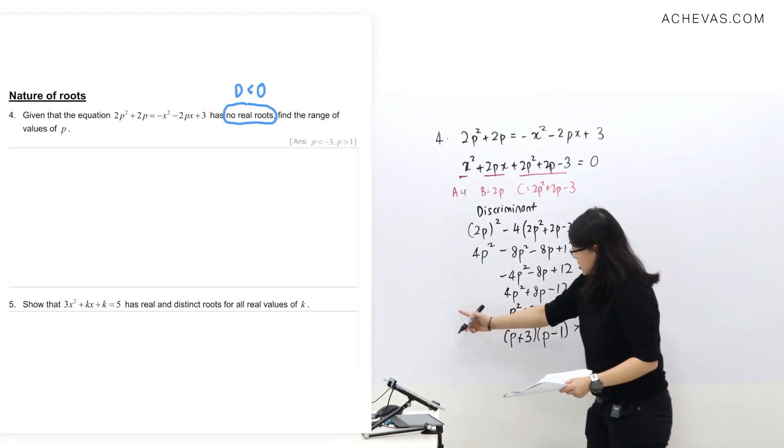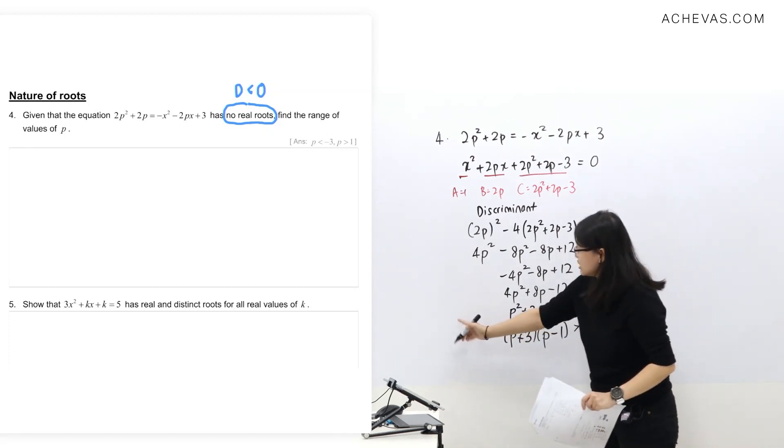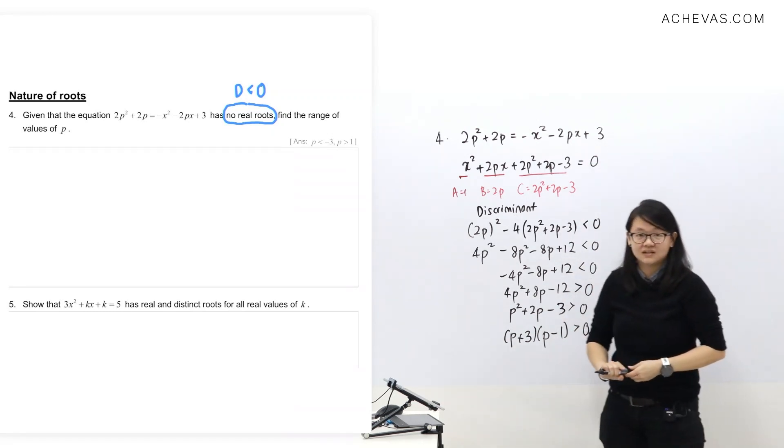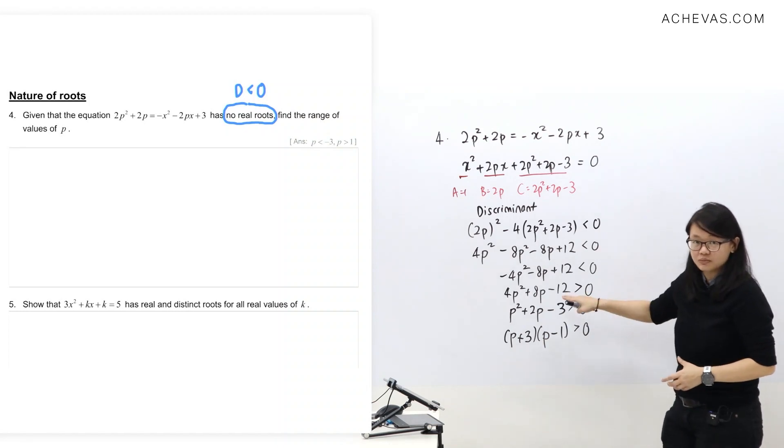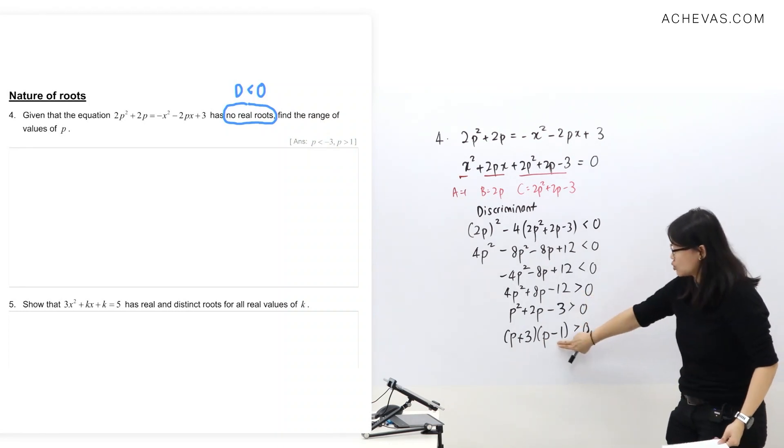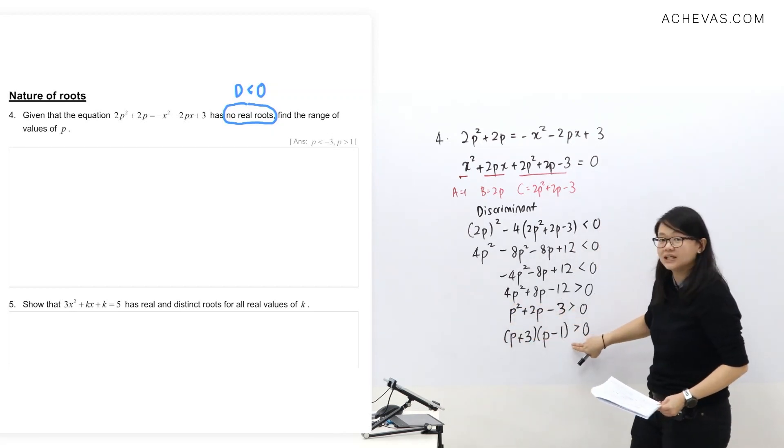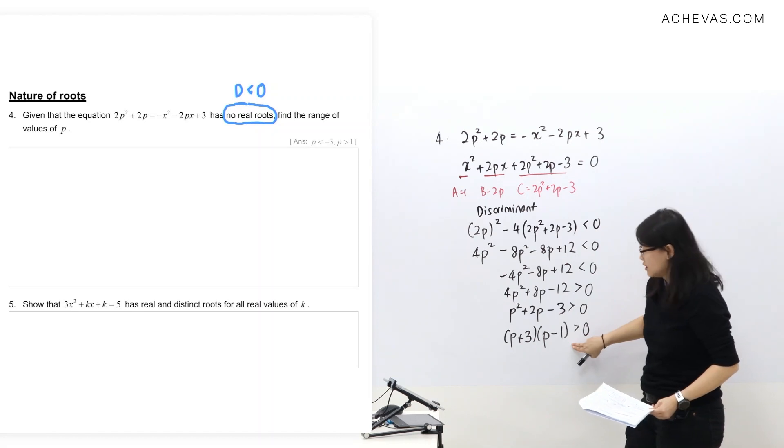I'm going to draw the quadratic in p over here. Don't also confuse that quadratic in x and quadratic in p - they are different quadratics. You do discriminant, it leads to quadratic in p. I'm going to sketch this quadratic in p over here to solve the quadratic inequality in p.